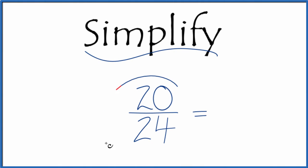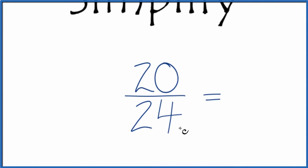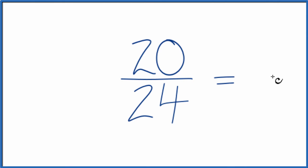Let's simplify the fraction 20/24. Here's how we do that. What we want to find is another fraction that's equal to 20 over 24. It's an equivalent fraction, just simplified or reduced down to its lowest terms.